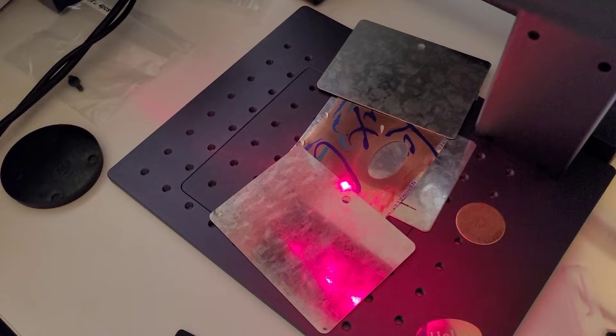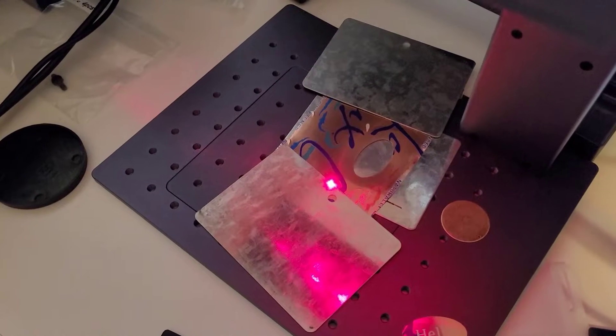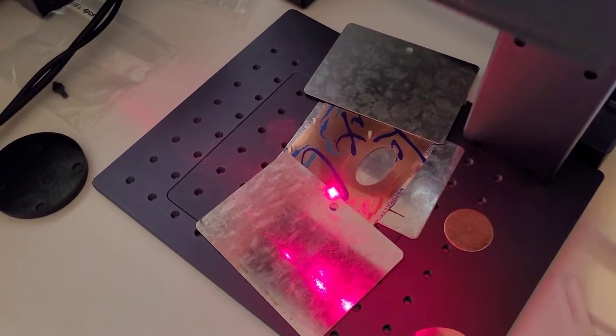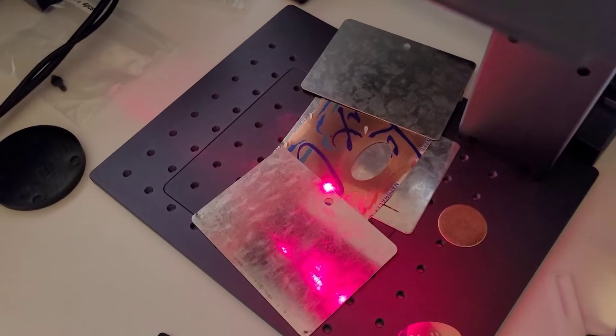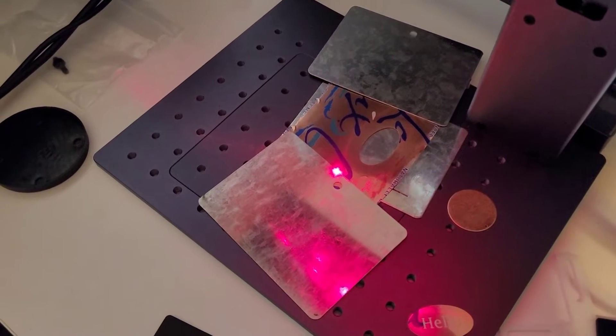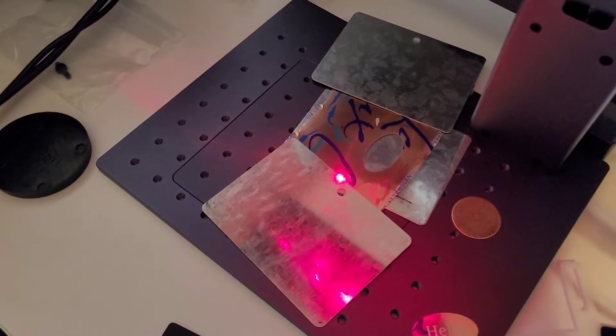And I just did the outline for this oval and then here in just a second I'm gonna hit the button to do the engraving first, just the word hello, and then it's gonna run 15 times to cut it.